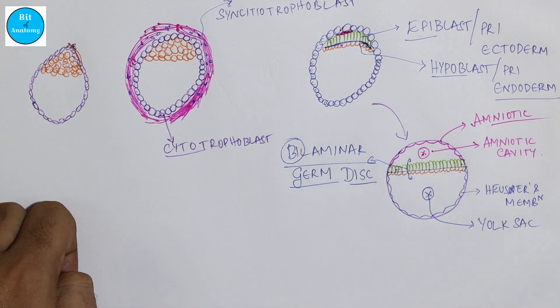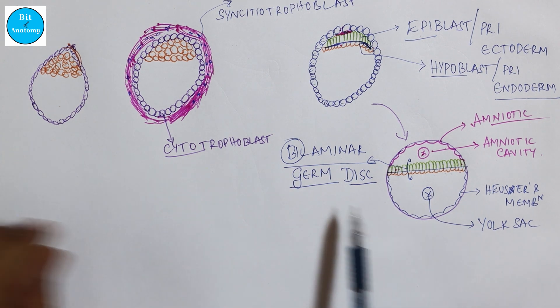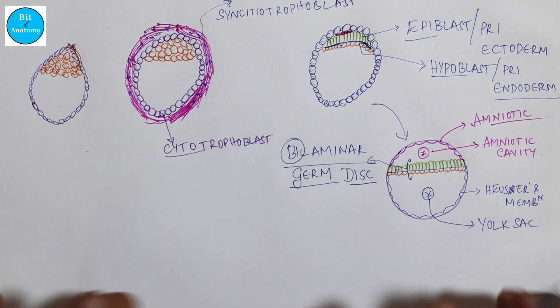These two layers help in the formation of the embryo — that is why it is called the bilaminar germ disc. It gives rise to various layers of the developing embryo and it appears like a disc. These are the initial changes that occur in the second week in the embryoblast.